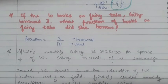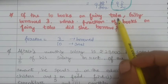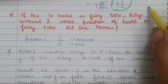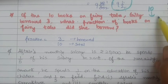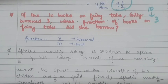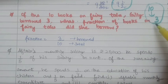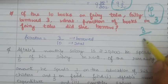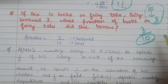The next question: of the 10 books on fairy tales, Gilly borrowed 3. So we have to find the fraction of books on fairy tales Gilly borrowed, which is 3 upon 10. Why 10? Because this is the total.